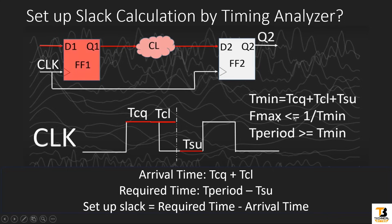Sometimes our requirements are very strict — we give a period like 2 nanoseconds, which is a very tight requirement. In that case, the P&R tool may not be able to make placement and routing to serve the requirement, and arrival time will be more than the required time. In that case, slack will be negative, meaning our design will not work at the required frequency. In this calculation, I considered the simplest case where clock skew is 0. But practically, when the clock comes from an IO pad, there will always be some delay when it reaches the source flop and the destination flop.